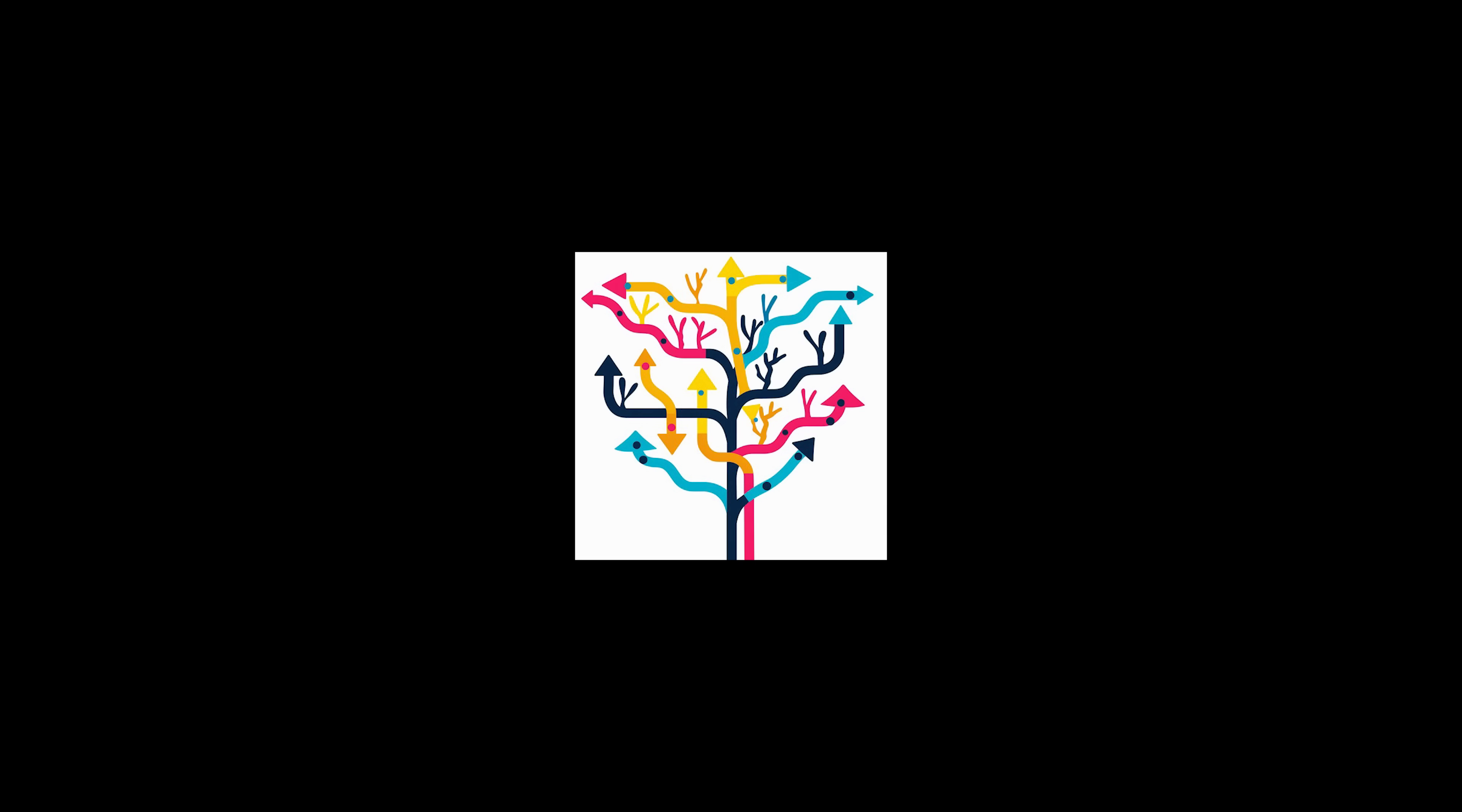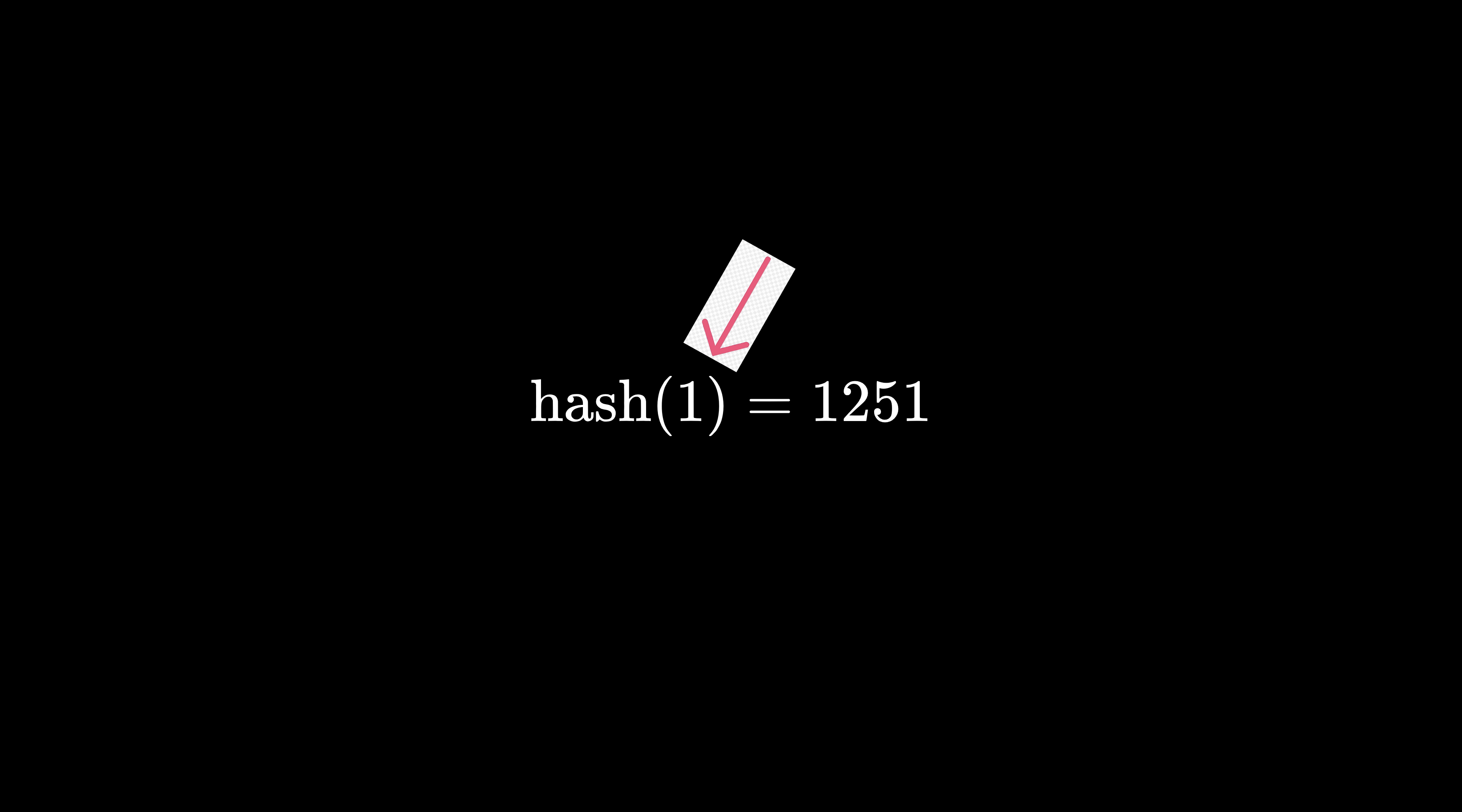Hash functions are pseudo-random because the same inputs will always have the same outputs. The quality of a hash function is measured by the lack of a perceivable pattern in the RNG, and inputs close in value should have wildly different outputs. For instance, if we hash 1, its result should be very different from hashing 2 or 3, and so on.